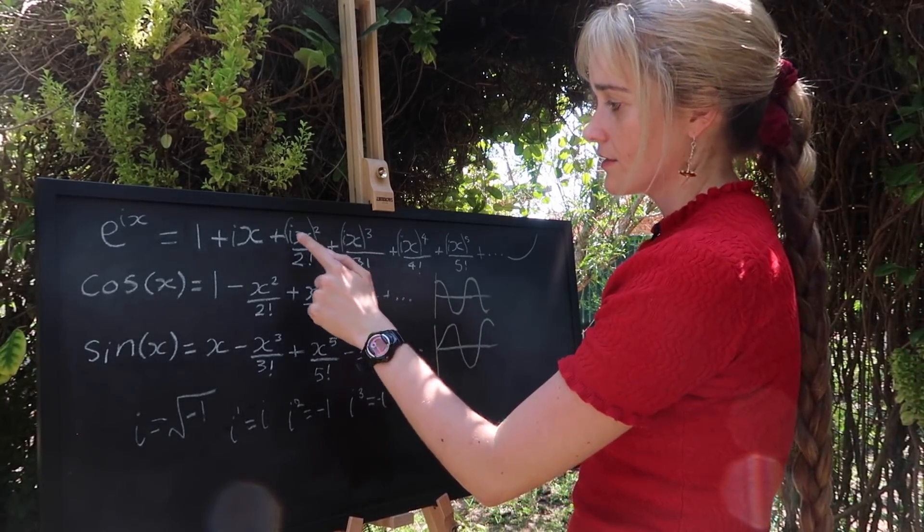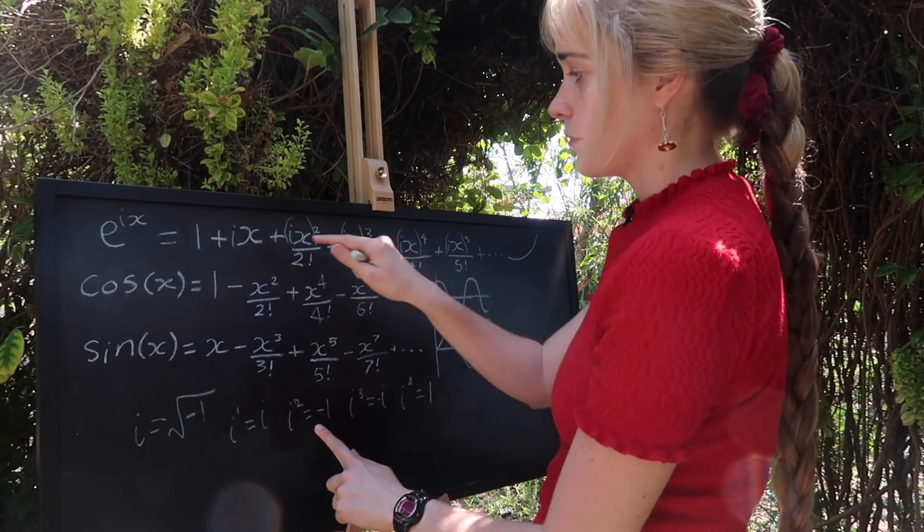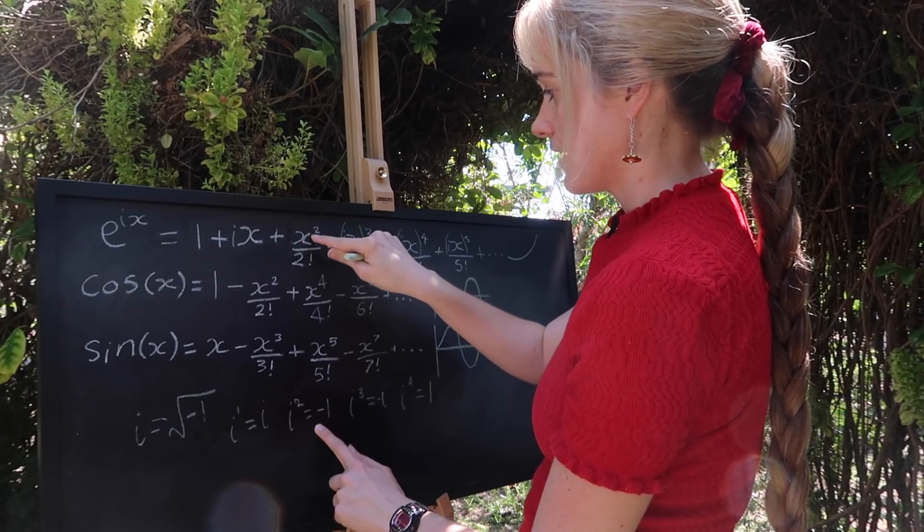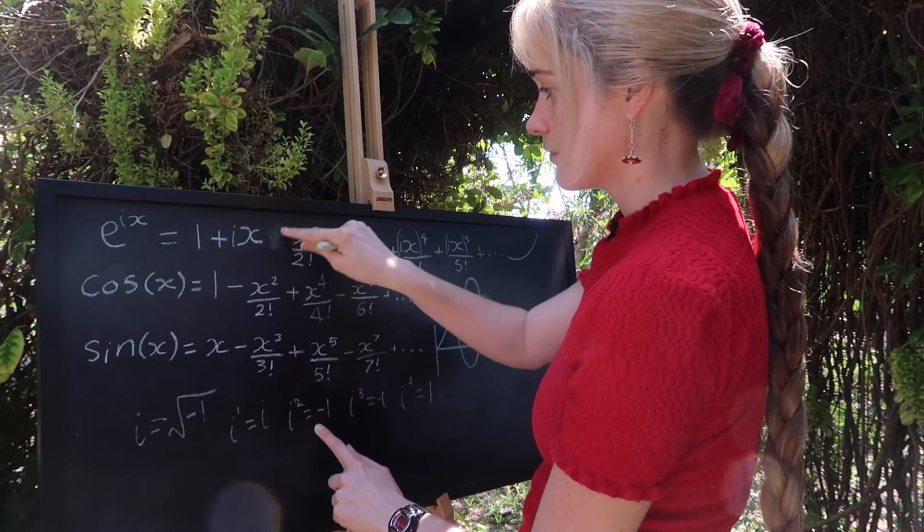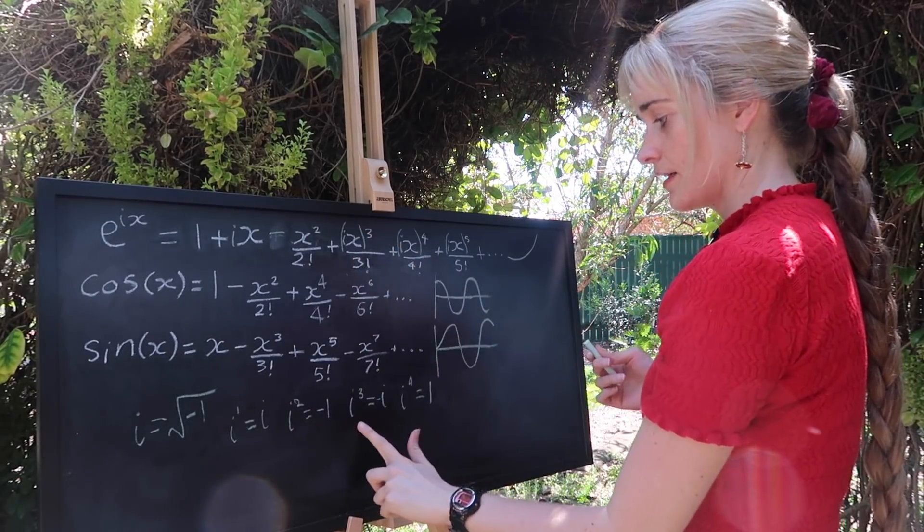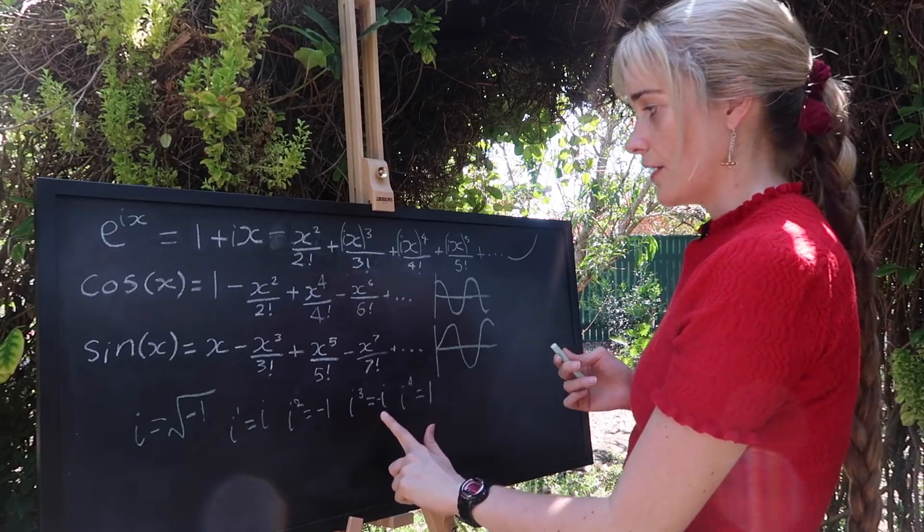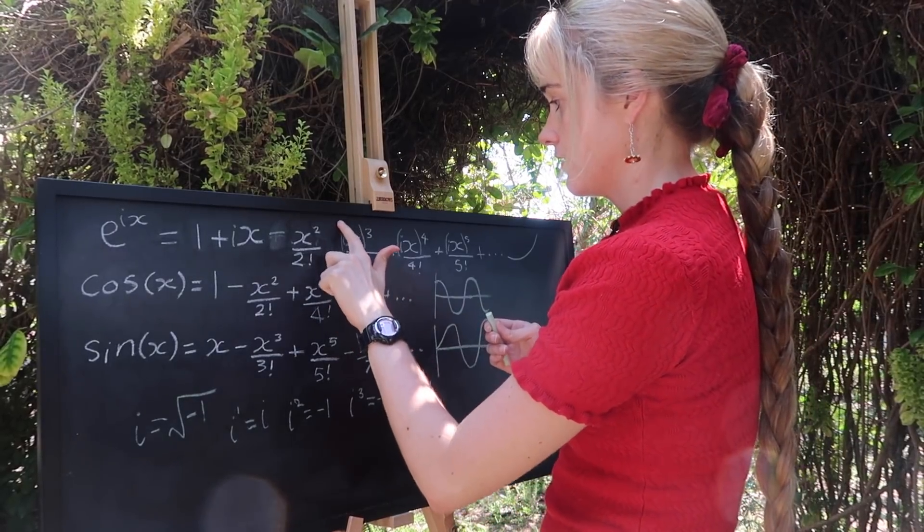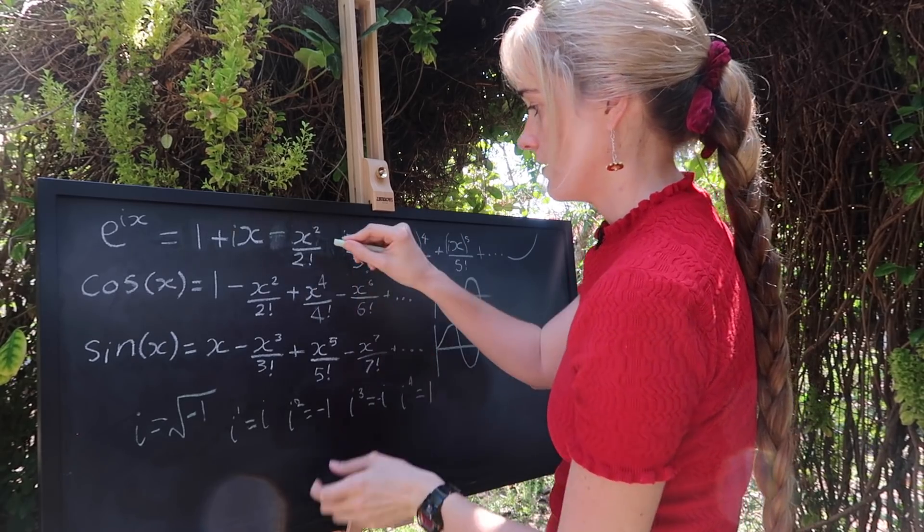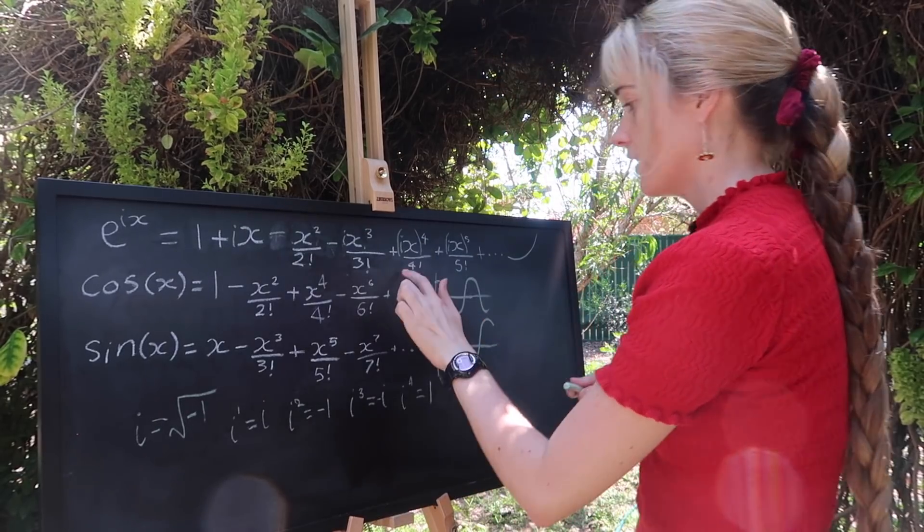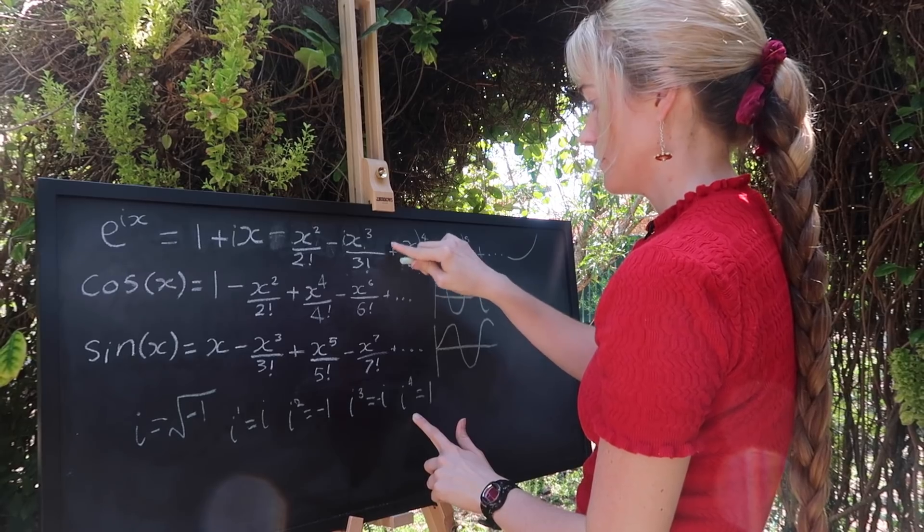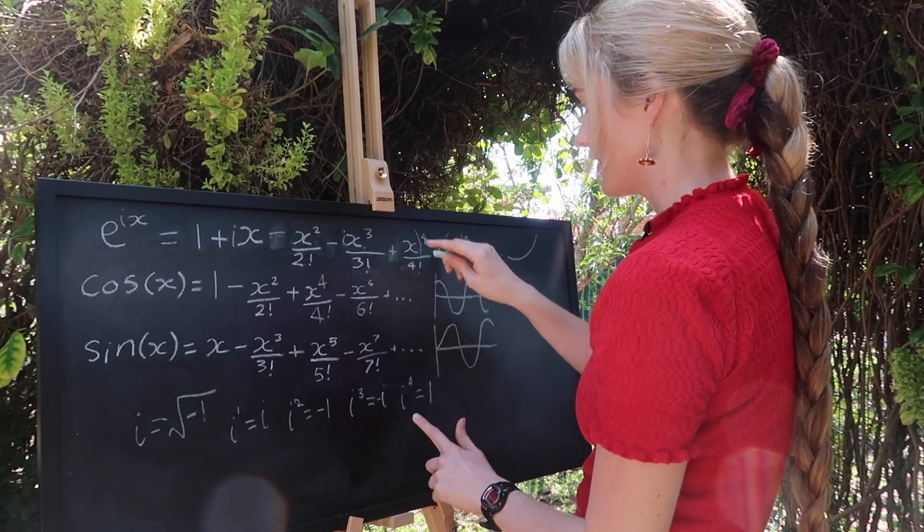So if we have an i squared in this term here, we can replace that with a minus one. Let's take out that i, take out that bracket and change this to a minus one. Here we've got i cubed, we can replace that with a minus i. i to the four, we can replace that with a one.